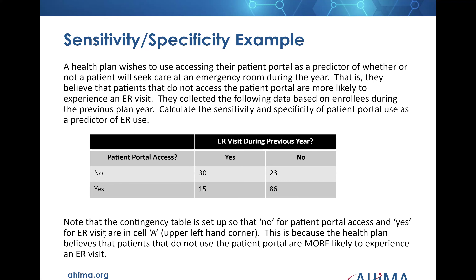Here's how this plays out. A health plan wishes to use their patient portal as a predictor of whether a patient will seek care in an emergency room during the year. They believe that patients who do not use the patient portal are more likely to experience an ER visit. They collect the following data based on enrollees during the previous plan year. In this table, patients who did not have patient portal access had 30 emergency room visits versus 23 who did not visit the ER. For patients that did have portal access, 15 visited the ER versus 86 who did not.